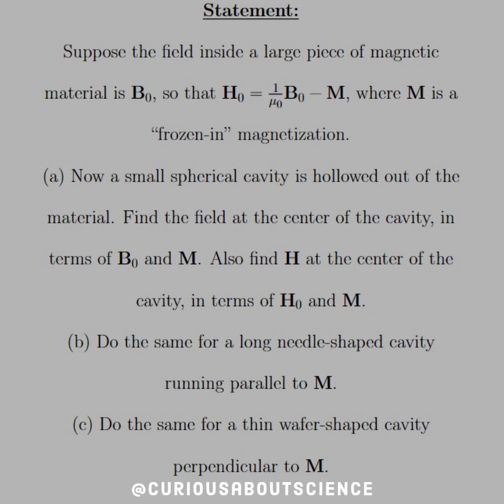Part A: Now a small spherical cavity is hollowed out of the material. Find the field at the center of the cavity in terms of B-naught and M. Also find H at the center of the cavity in terms of H-naught and M.